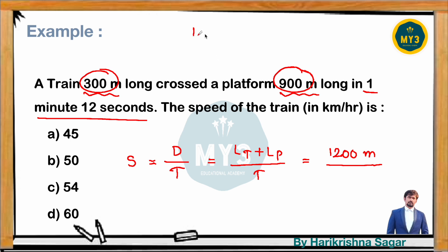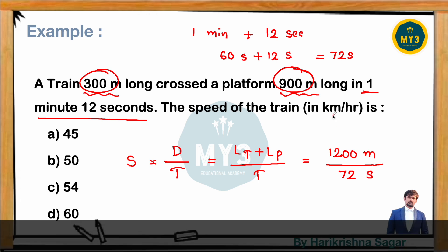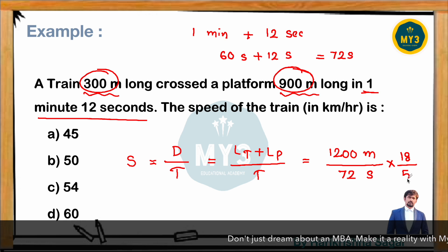Time is 1 minute 12 seconds. Converting to seconds: 1 minute = 60 seconds, so total time = 60 + 12 = 72 seconds. Speed = 1200 ÷ 72 meters per second. But the answer is expected in km/h, so multiply by 18/5 to convert from m/s to km/h.